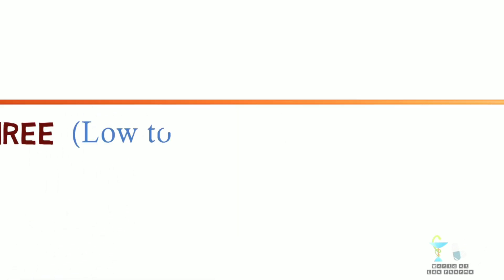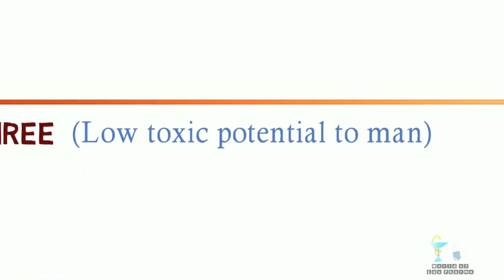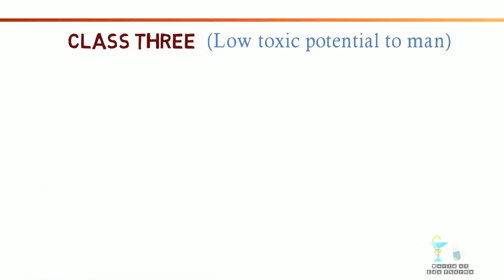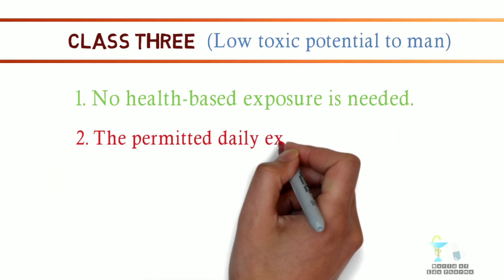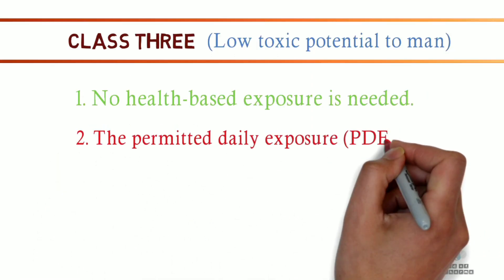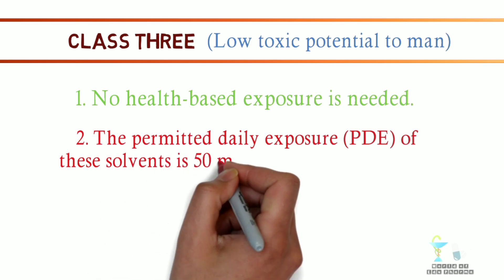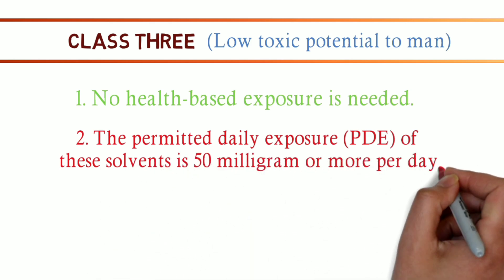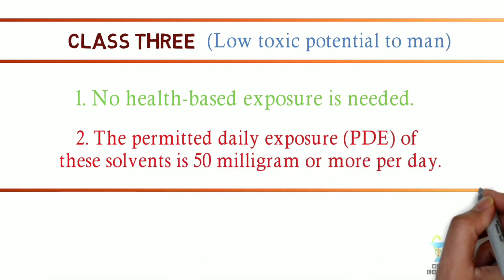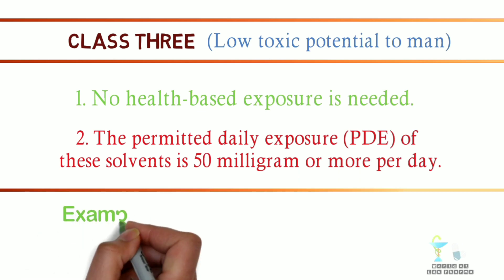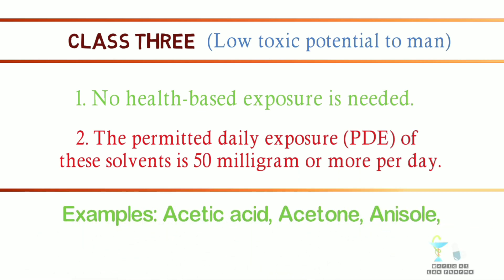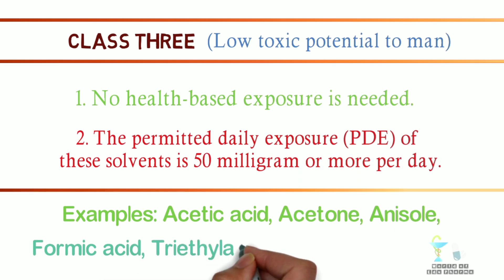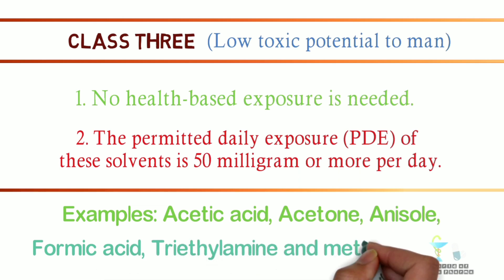The last class is Class 3, which includes solvents with low toxic potential to man; no health-based exposure limit is needed. The permitted daily exposure, PDE, of these solvents is 50 mg or more per day. Examples: acetic acid, acetone, anisole, formic acid, triethylamine, and methyl acetate.